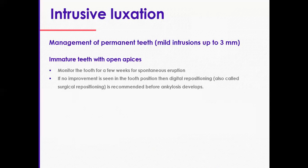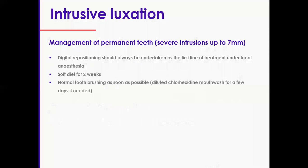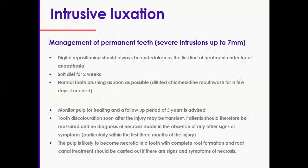If you're happy to manage it, by all means do so. If you have a mature tooth with a closed apex, just go for repositioning under local anesthetic and then provide a flexible splint for four weeks. In severe intrusions up to seven millimeters, if you can see it, try digital repositioning first, soft diet for two weeks, normal brushing, and place a flexible splint for four weeks. Monitor pulpal health up to five years and reassure patients regarding discoloration. The pulp is likely to become necrotic in these crushing injuries in mature teeth. Look for signs of infection and necrosis and start root canal treatment if you observe them — generally, these teeth will require root canal treatment.